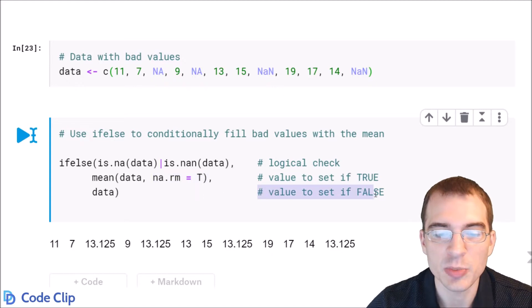And then the last thing you pass in is just what to do if that initial check is false. And in this case, we don't want to do anything. So we simply pass the original data back in. And when we run this, all of the data, the bad values, are filled with the mean. And anything that wasn't bad just returns the original value.